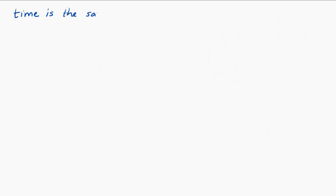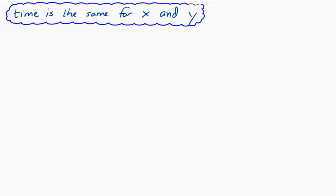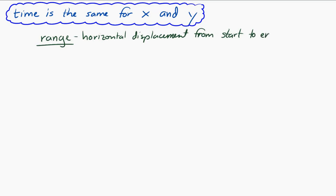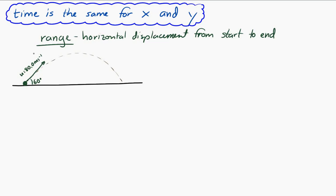One final key idea: time is the same for both x and y — it has no horizontal or vertical component. Time acts as a bridge between the horizontal and vertical directions. We also define the range of a projectile as the horizontal displacement from beginning to end. For example, an object launched at 80 meters per second at 60 degrees above horizontal — we want to find the range, the horizontal displacement from launch until it hits the ground.